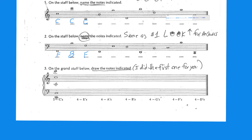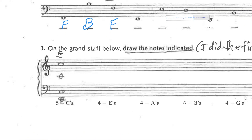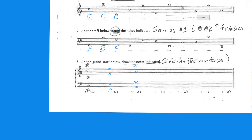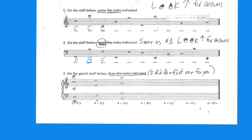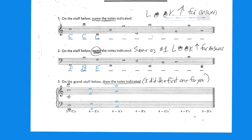And number three, what you're going to have to do here is draw four — or however many they say — of the notes. So in this case, to draw four E's, you're going to need a ledger line here. Don't need one here, don't need one here, don't need one here. And for the A's, you're not going to need one here, not going to need one here, not going to need one here, but you do need one here. So I did part of number three, part of number two, and part of number one for you. You get to do the rest. Have fun.